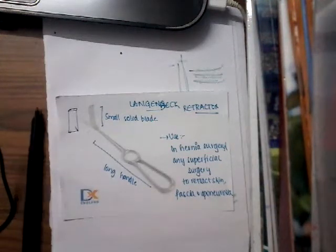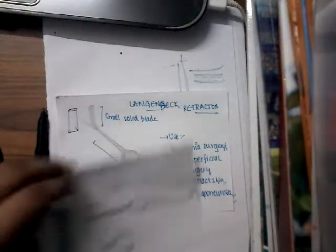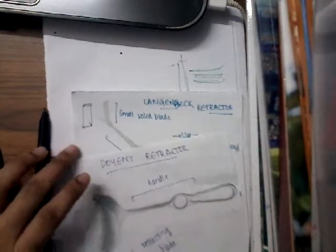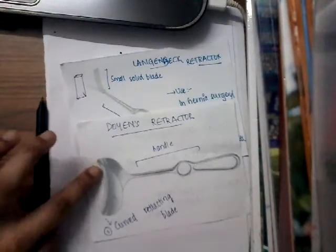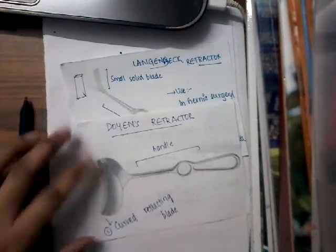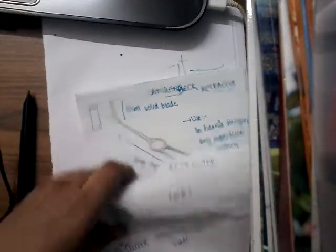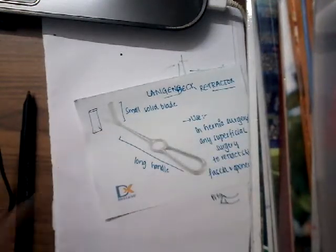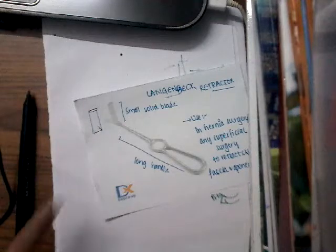If you see the Doyen's retractor, it looks similar in terms of the handle, but the Doyen's retractor has a curved blade, whereas Langenbach's retractor has a straight blade.